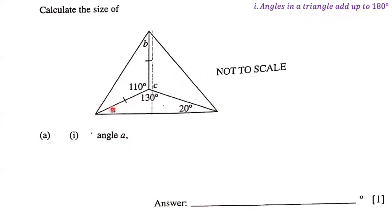Notice that we have angle A, and angle A is part of this particular triangle. That means that 130 plus 20 plus angle A must add up to 180 degrees, because angles in the triangle add up to 180 degrees.